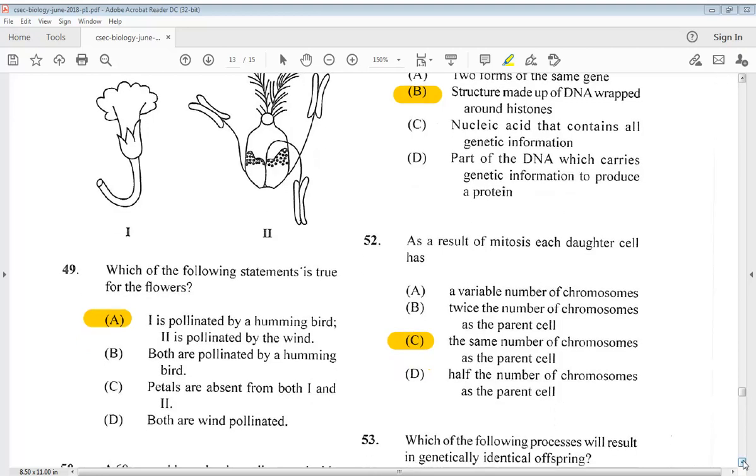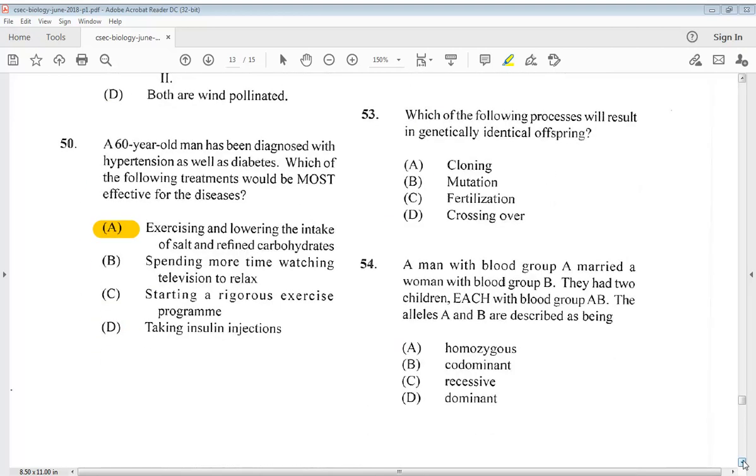Let's go to 53. Which of the following processes will result in genetically identical offspring? A. Cloning. B. Mutation. C. Fertilization. Or D. Crossing over. So we know it is A, cloning.